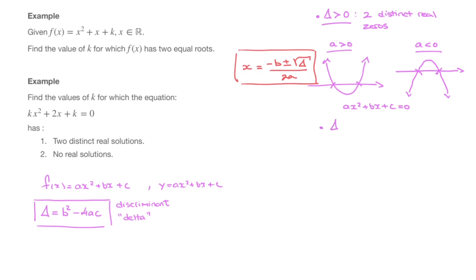The second possibility is if delta equals zero. In this case, the quadratic function has two equal real roots. Since the two roots or zeros are equal, we sometimes say it has one single solution, which we call the double root. What this means in terms of the parabola is that it only touches the x-axis in one point.